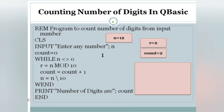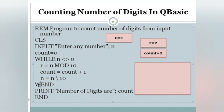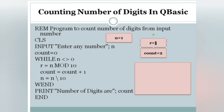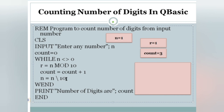Count equals to count plus one — count was 1, so now count is 2. Then N equals to N integer division 10 — it removes the last digit, leaving N equals 1. The loop goes back to check: 1 not equals to zero — true. R equals to N MOD 10 gives remainder 1, so R equals 1. Count equals to count plus one — count becomes 3. N equals to N integer division 10: 1 divided by 10 gives quotient zero, so N equals 0.